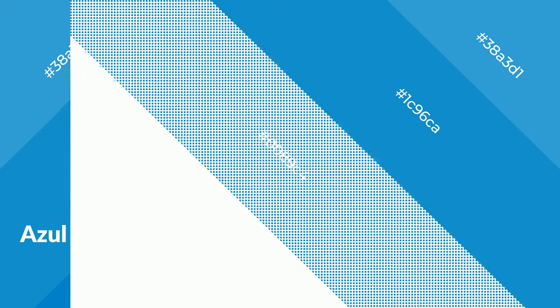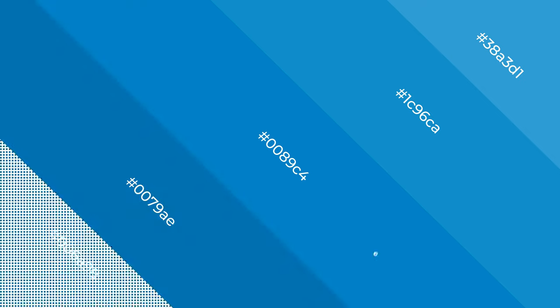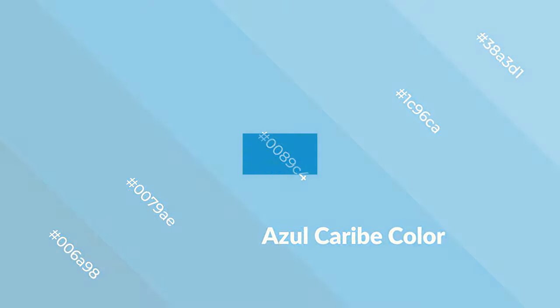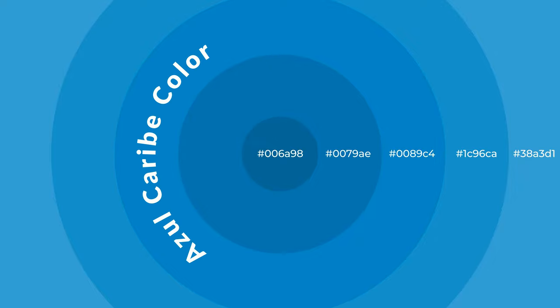Cool colors are like water, ice, sky, grass, soft, and snow. You can see them used in baby products.